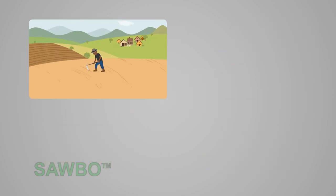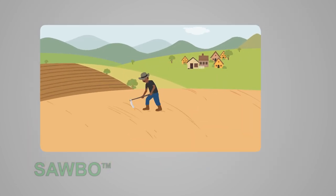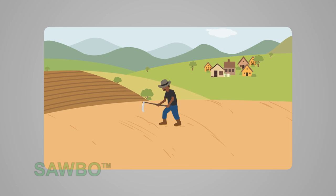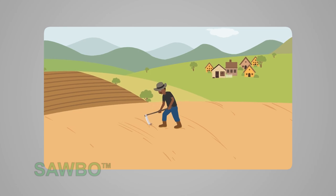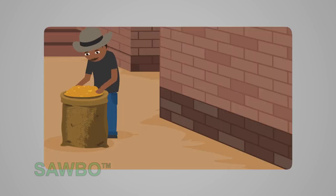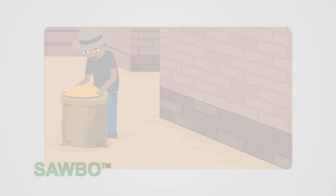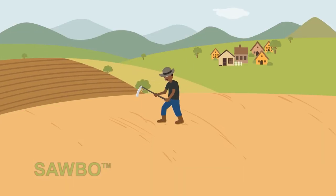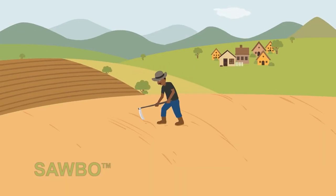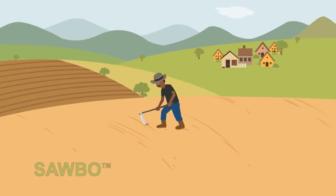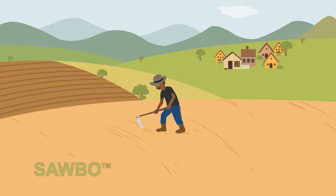The first example we are going to see is how a negative influence can affect an entire value chain. This is a farmer. We will observe how he grows his maize crop.